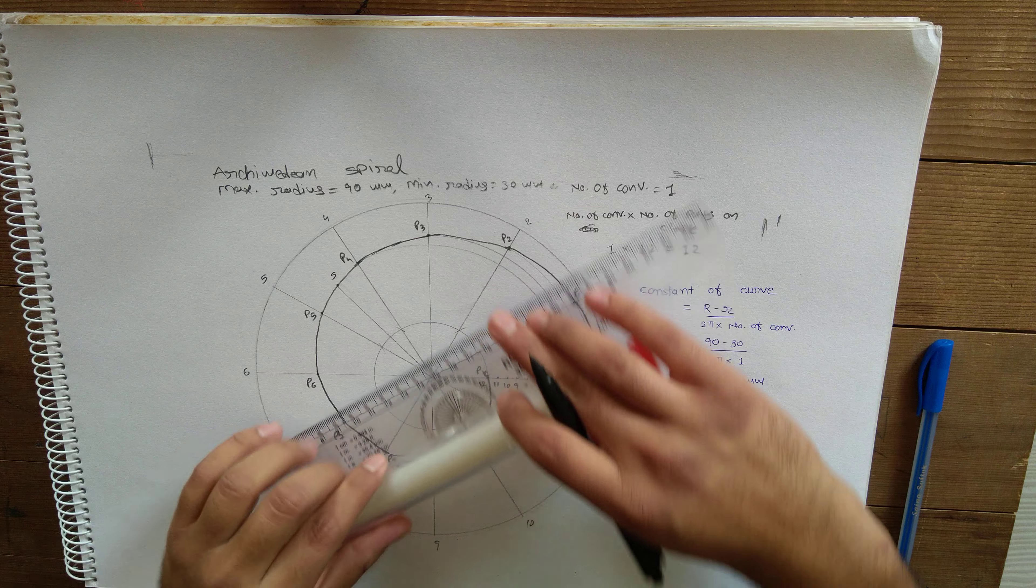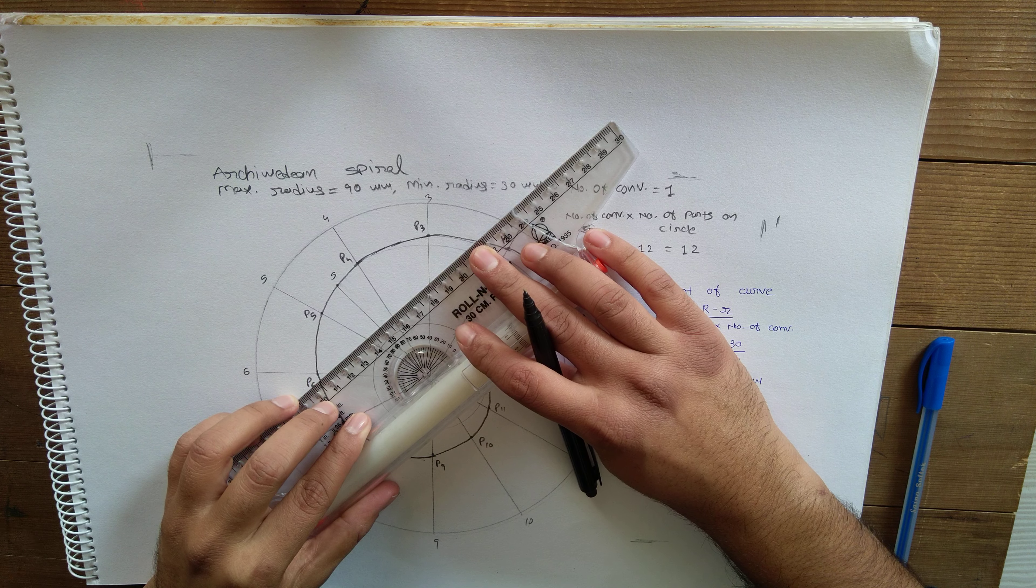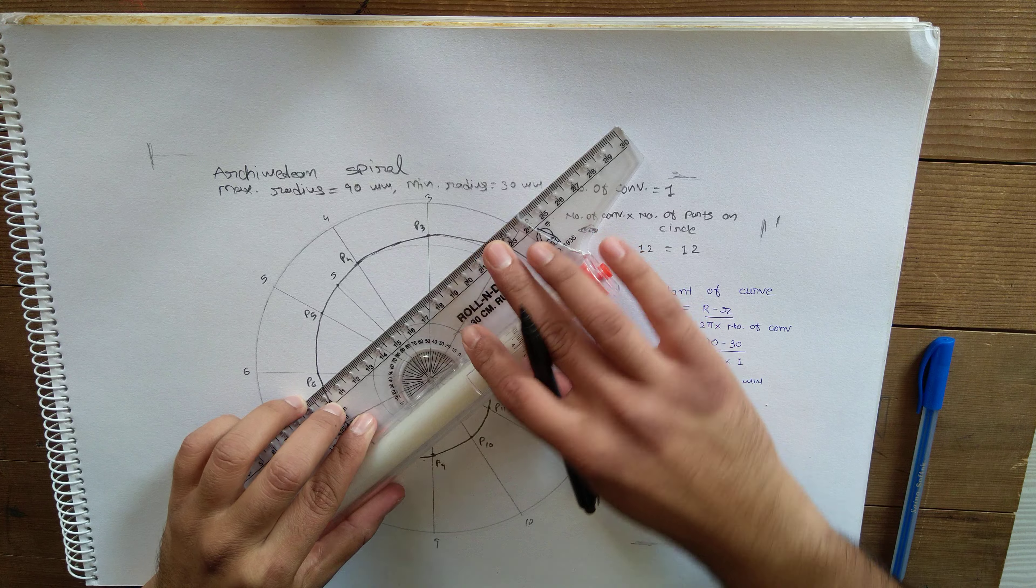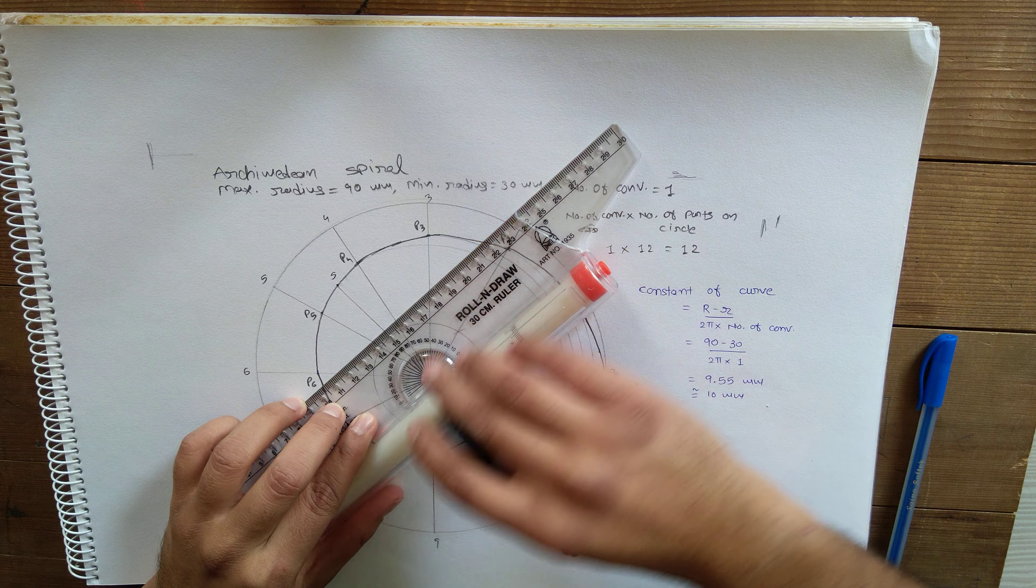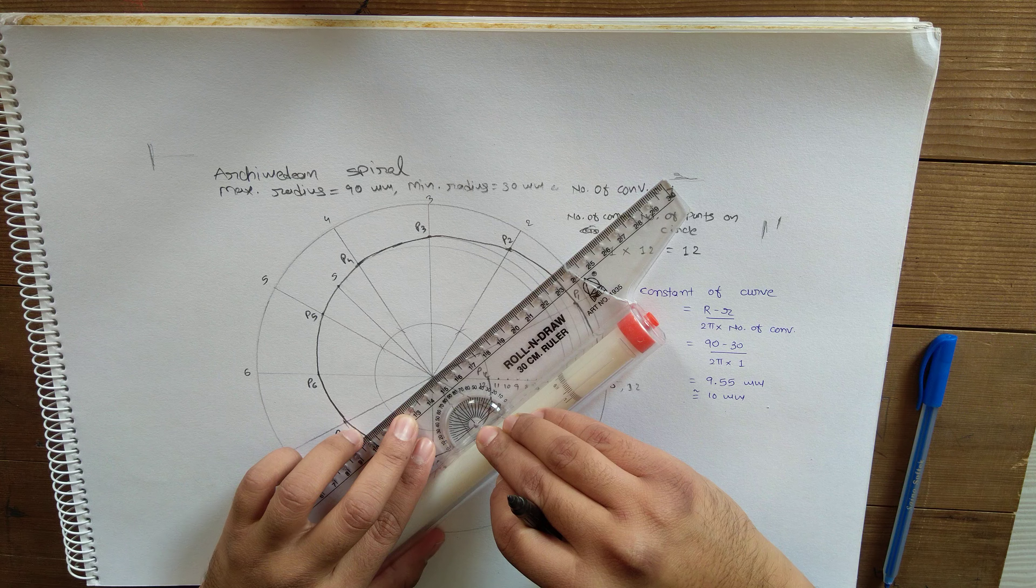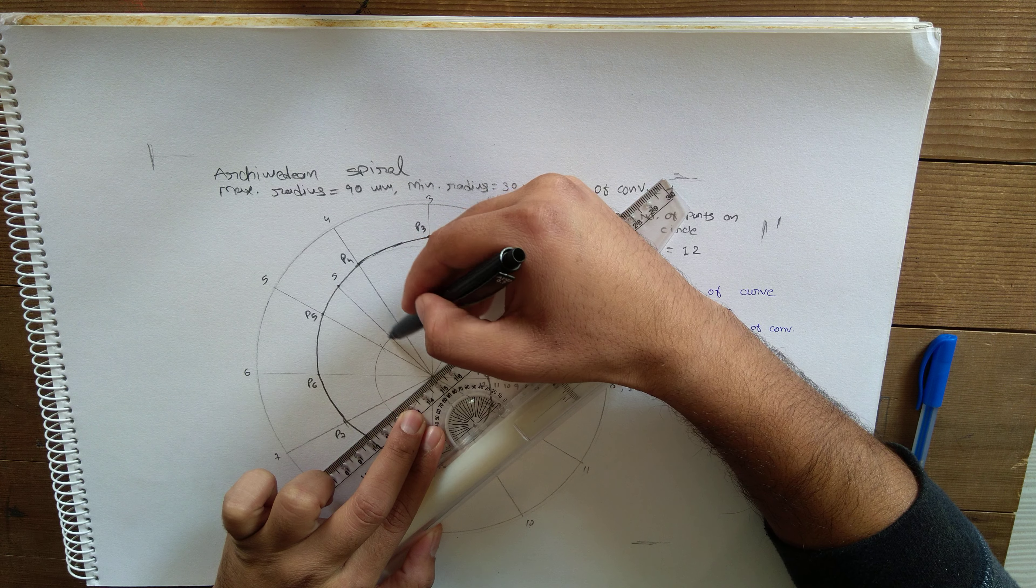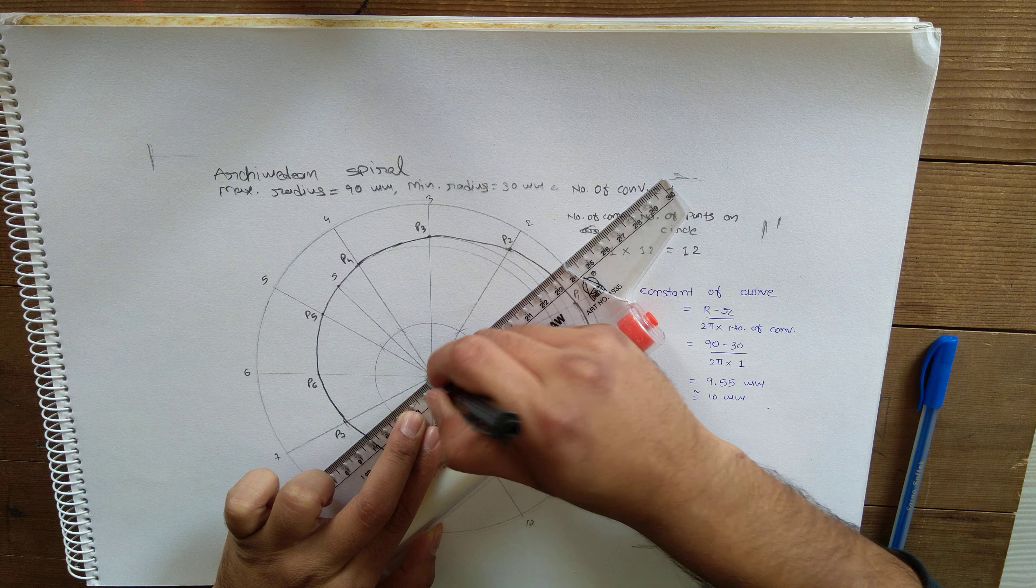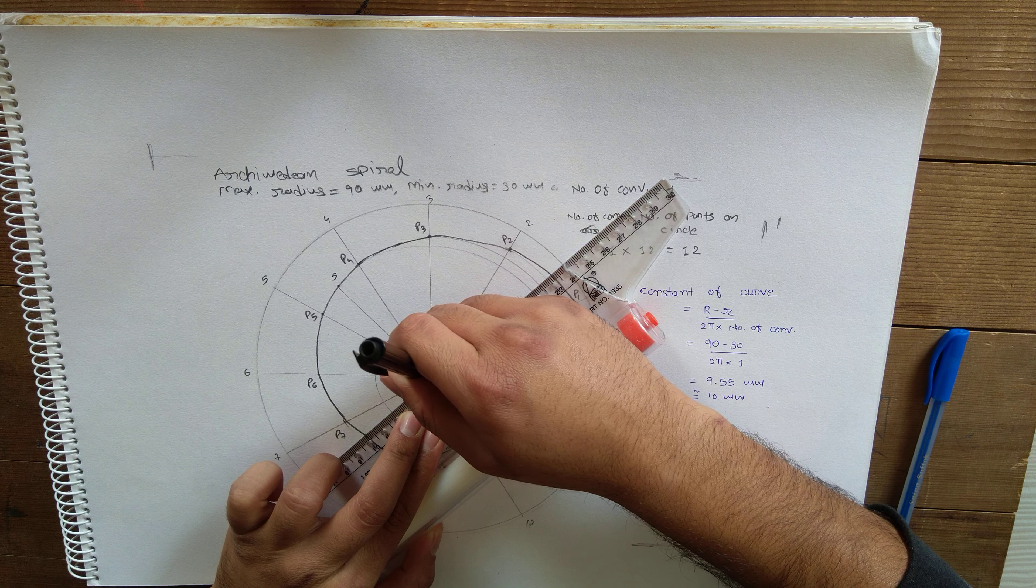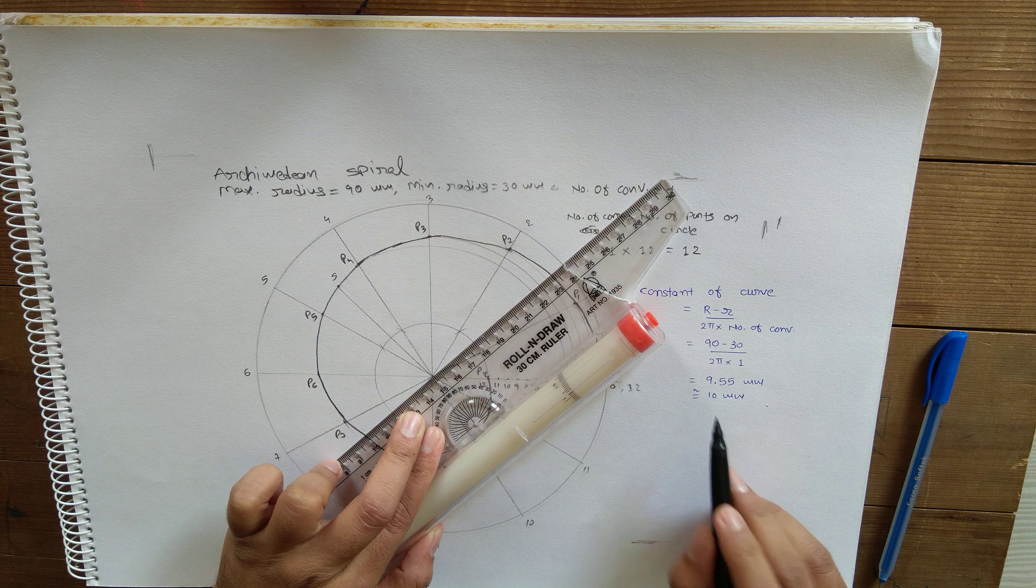line which is 90 degrees to this. I am ensuring that this is perfectly at 90 degrees to this line, and the length should be of this dimension, here it is 10mm.